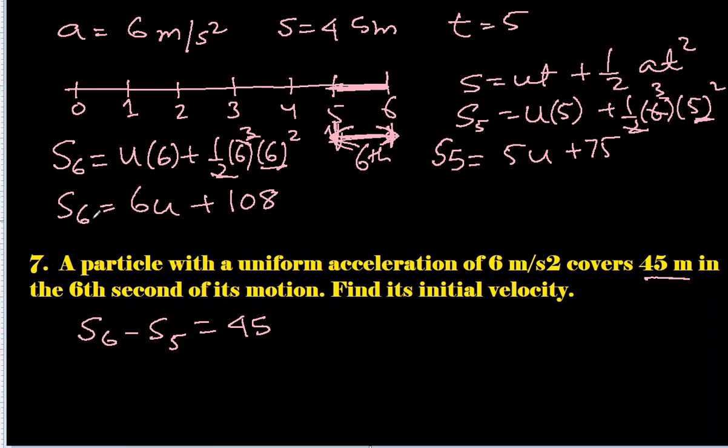So s₆ we got 6u + 108, minus s₅ we got was 5u + 75, and which was equal to 45 meters. So 6u minus 5u is just u, 108 minus 75 will be 33.